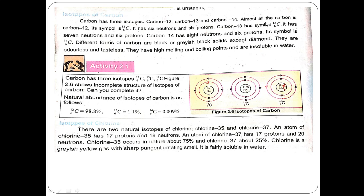Carbon-13 has the symbol C with atomic number 6 and mass number 13. It has 7 neutrons and 6 protons. For carbon-14: number of protons = 6, and 14 minus 6 = 8 neutrons.